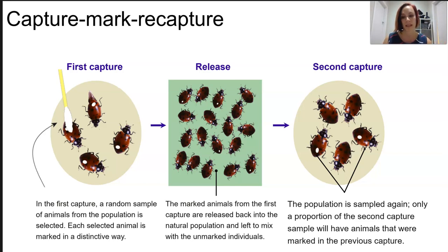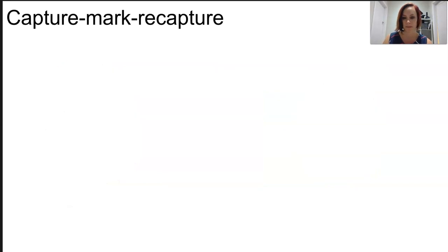We can use these values to figure out an approximate population size. So we use the Lincoln index, and this here is the Lincoln index. It is a formula that basically helps us figure out, using the mark-recapture numbers, how many would be in the full population.